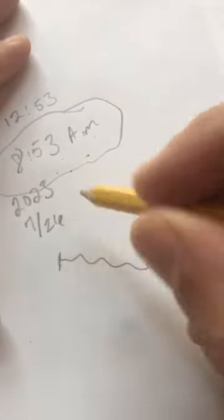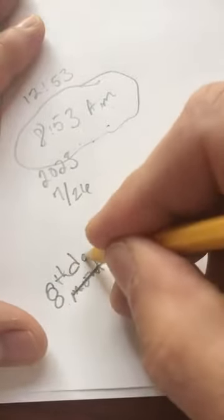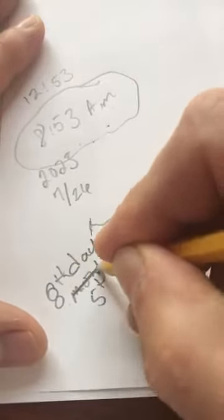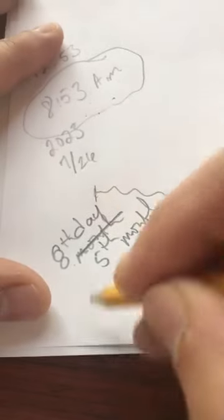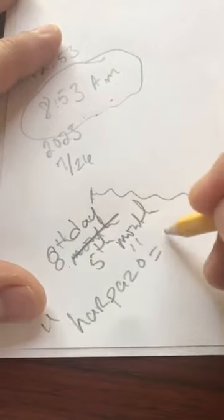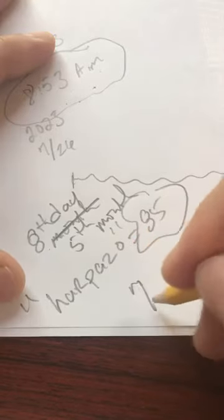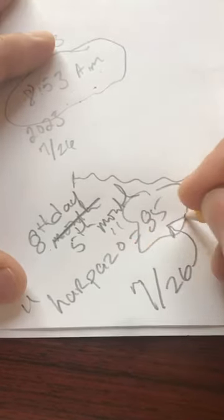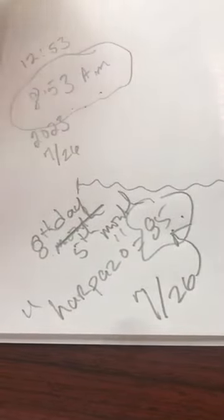2023 July 26, Harpazo. What is this day? This is the eighth day, fifth month. Harpazo. What's Harpazo in simple English? 85. What's Harpazo's Strong's number? 726. July 26 is eighth month, fifth day. Let's go. There it is, boom.